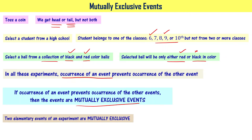For example, when you toss a coin, getting head is one elementary event because it has only one favorable outcome. Getting tail is another elementary event — it also has only one favorable outcome. Getting head and getting tail are mutually exclusive events. At the same time, we say that these two elementary events of an experiment are mutually exclusive events.